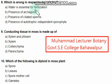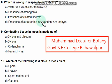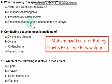The next question is: which statement is wrong in respect to bryophytes? Water is essential for fertilization — true. Presence of archegonia — true. Presence of ciliated sperm — true. Presence of autotrophic independent sporophyte — this is wrong about bryophytes, because the bryophyte sporophyte is not independent. So option D is the correct answer.